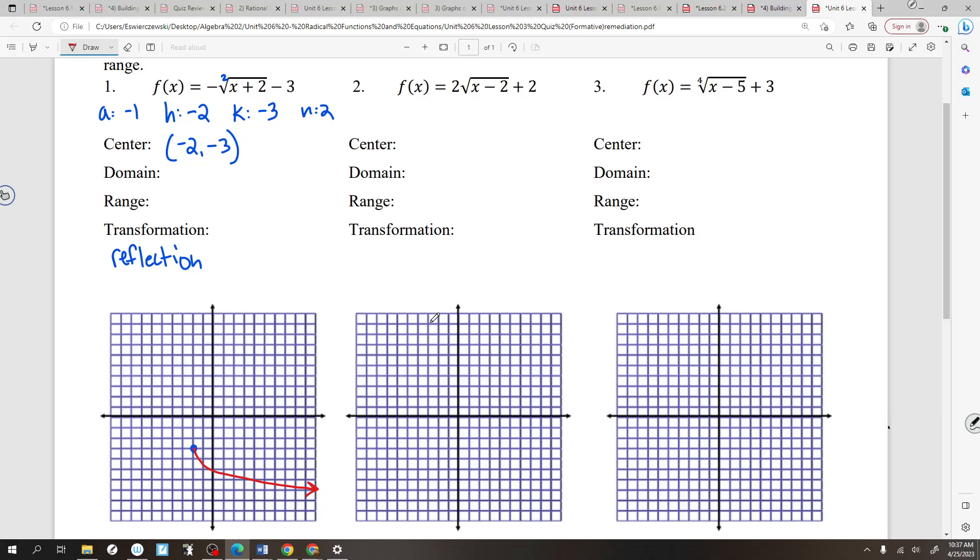Now, the domain. Remember, domain is left and right. So how far left can it go? Negative 2 in a bracket. How far right does it go? Infinity. Thank you, Janet. Nice.